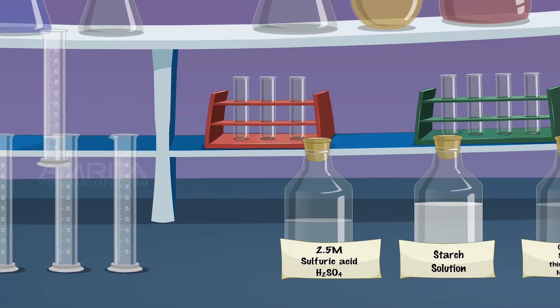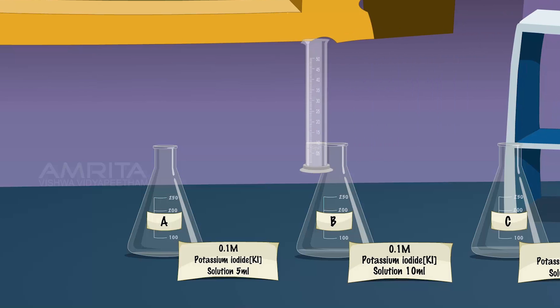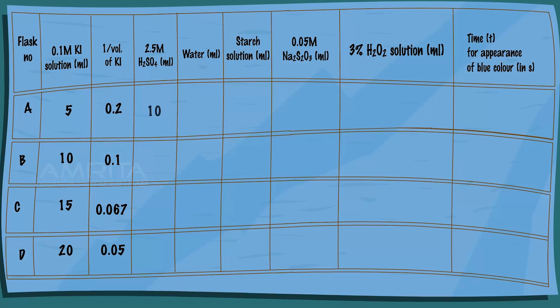Pour it into conical flask A. Repeat the same procedure for the remaining flasks.